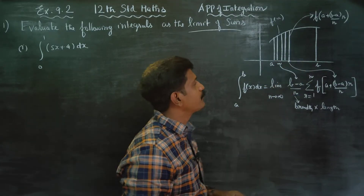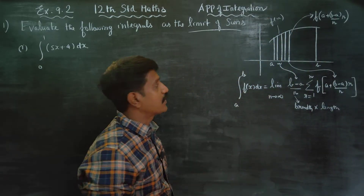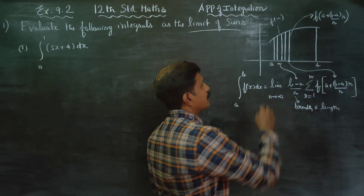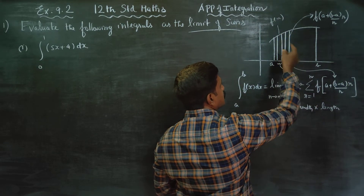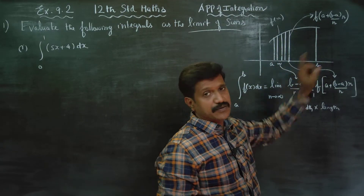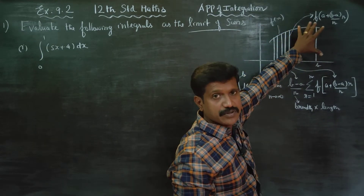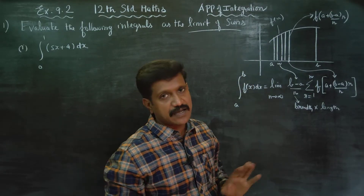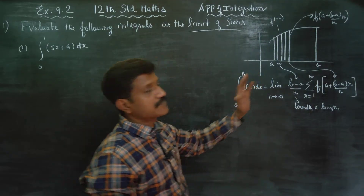This is a sample example. If you want to find the full area, think of it as rectangles — each with a length and a breadth. Length into breadth gives the area of each rectangle. Adding all of them gives the total area of the diagram.